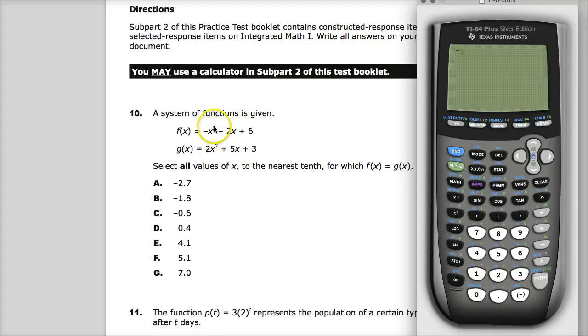So I'll do negative 2.7. Be careful. It's negative x squared. Because this is negative 2.7, you have to put negative negative 2.7. So really, wherever there is an x value, you need to put parentheses around it. So you'll notice there's two negatives right next to each other, separated by parentheses. That's okay. So going back, minus 2 times negative 2.7 plus 6. It gives me 4.11.